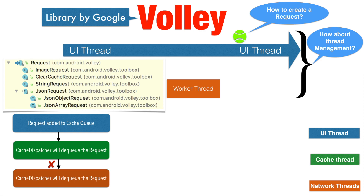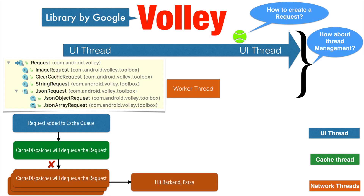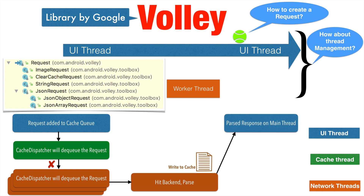On a cache miss, the request will be handed over to the network thread. To make it a little more efficient, Volley doesn't maintain only one network thread — it can actually maintain a pool of network threads. A request can be handed over to any one of the available network threads so that it can hit the backend and parse the response. Once the response is parsed, it will write it to cache, and after writing it to cache, it will give the response back to the main thread. That is where you go ahead and show the response on the UI, either on the fragment, activity, or any widget on the screen. Remember that it is not just one single network thread — there could be multiple network threads doing this.